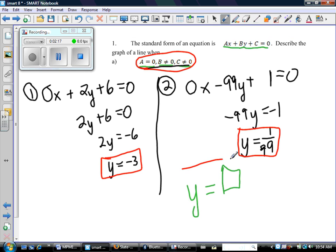You should recognize that any equation that looks like this is a horizontal line. So this is a horizontal line at y = -3. This is a horizontal line at 1/99. And in fact, every equation that looks like this will result in a horizontal line.